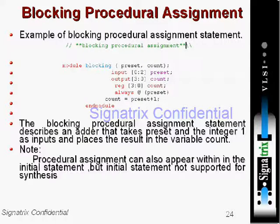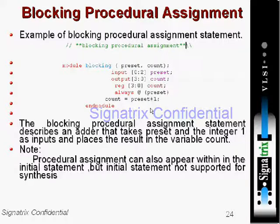In this example, there are two inputs: one input preset which is 3 bits, and the other output which is 4 bits named count. With always at the rate of preset, if there is any change in the preset this block executes. The value of output count equals preset plus 1, so whenever there is any change in preset the output is incremented by preset plus 1. This procedural assignment describes an adder which takes preset and the integer 1 as inputs and places the result in the variable count.